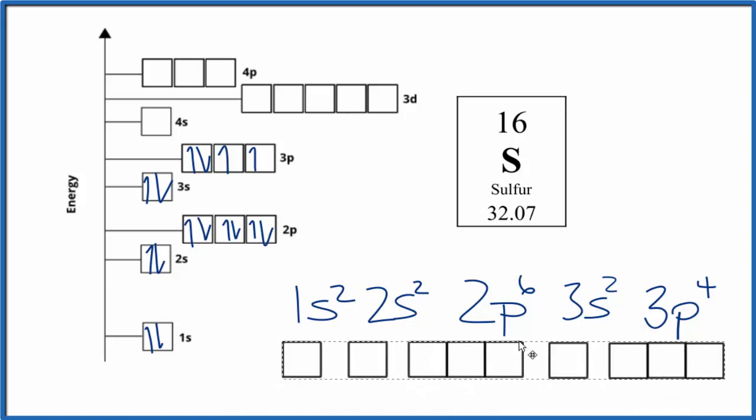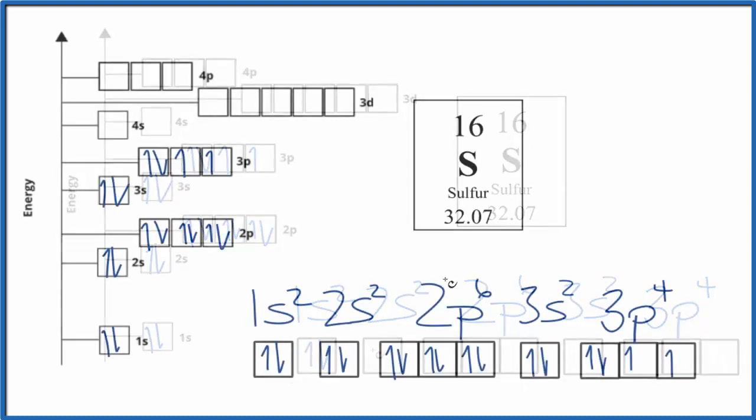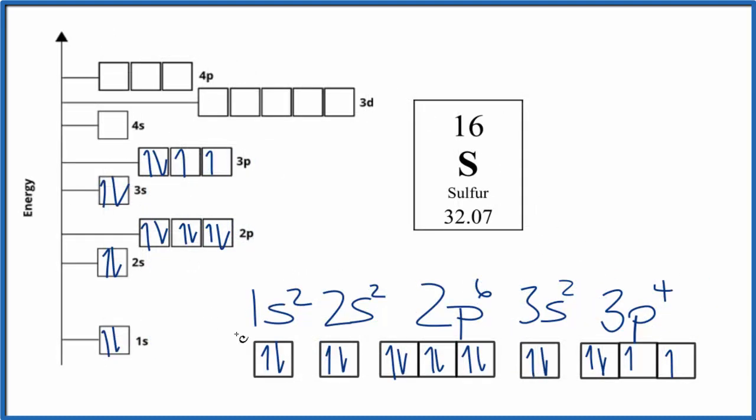Sometimes you'll see it written like this, kind of in a more horizontal manner. But it's the same thing. So again, all of these are just representations of where the electrons are around the nucleus of the sulfur atom.